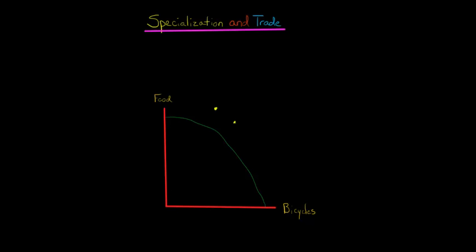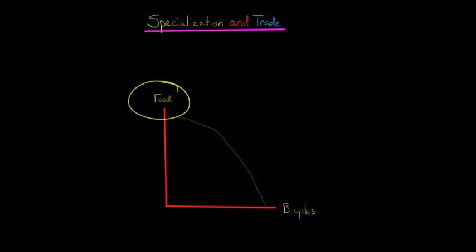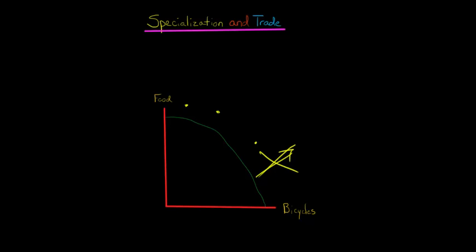These points are not currently feasible given our current level of resources. But by specializing in producing a good in which your country or economy has a comparative advantage, you can specialize and produce only that good — for example, food — and then trade with another country to get the bicycles or something you don't have a comparative advantage in producing, and you can actually consume at a point beyond the PPF. So you're not expanding the PPF the way you would with new technology or capital accumulation. What you're doing is specializing where you have a comparative advantage, trading with another economy, and getting to consume at one of those otherwise infeasible points.